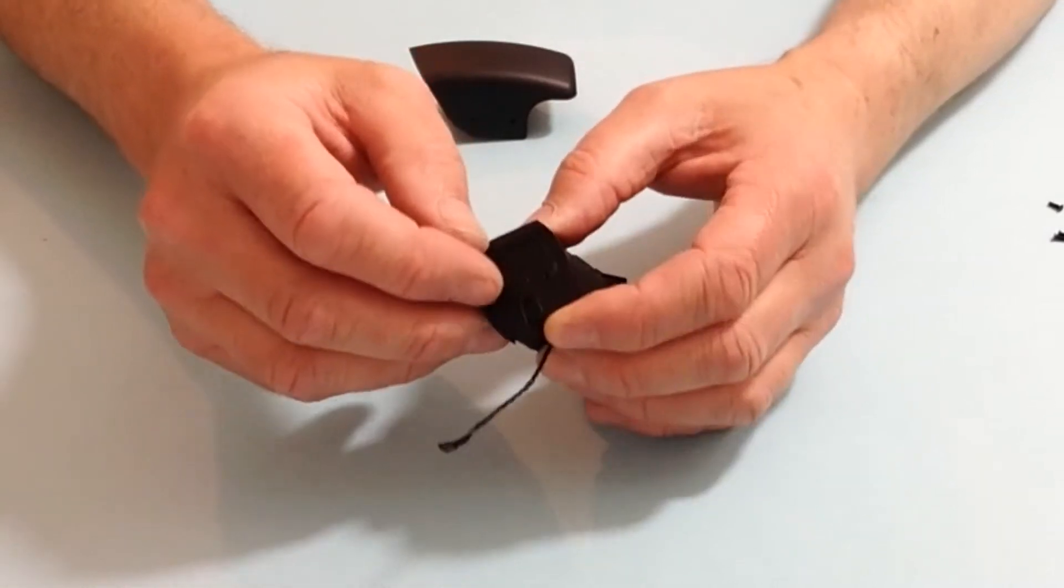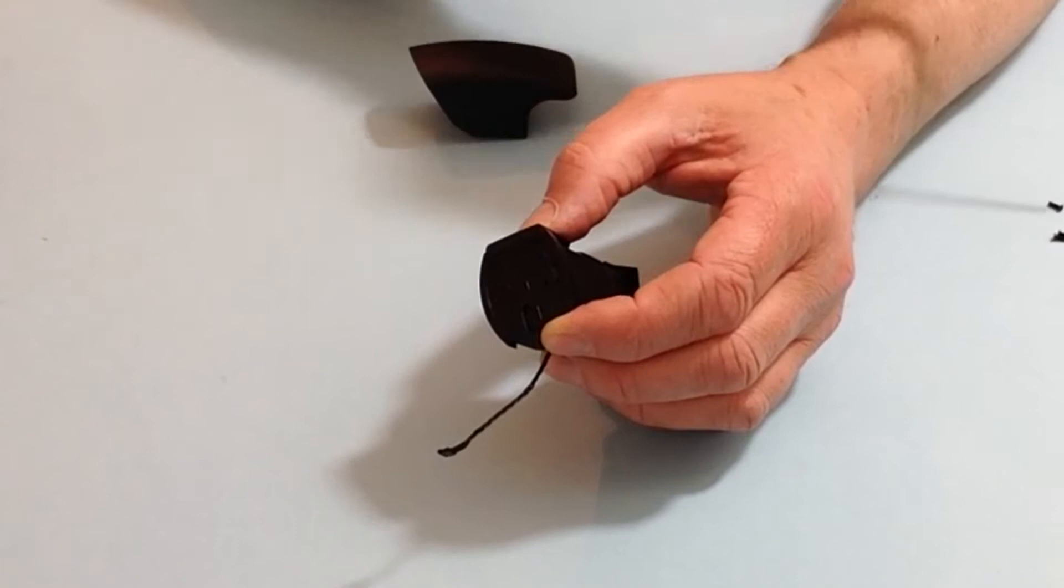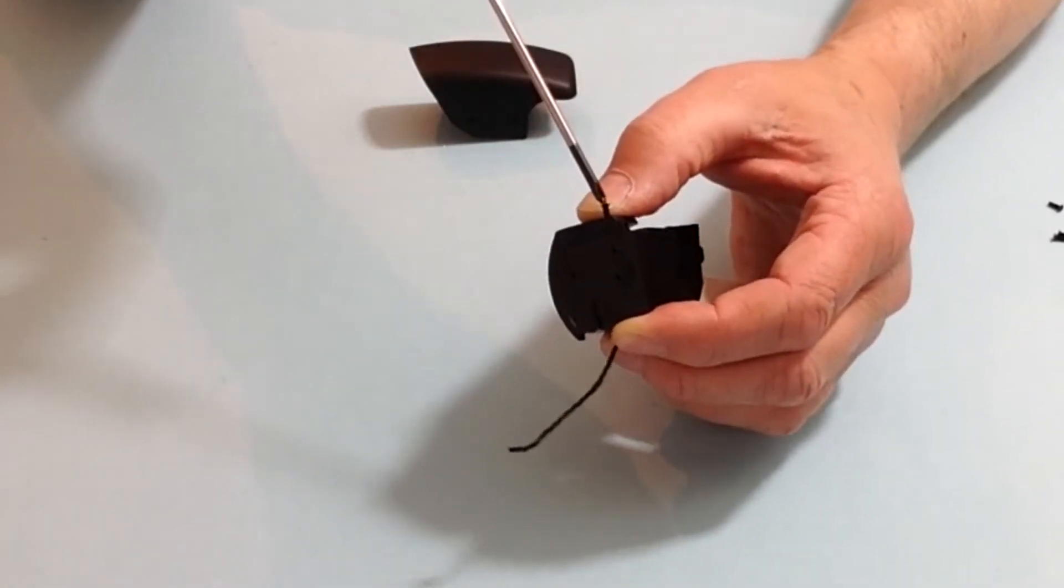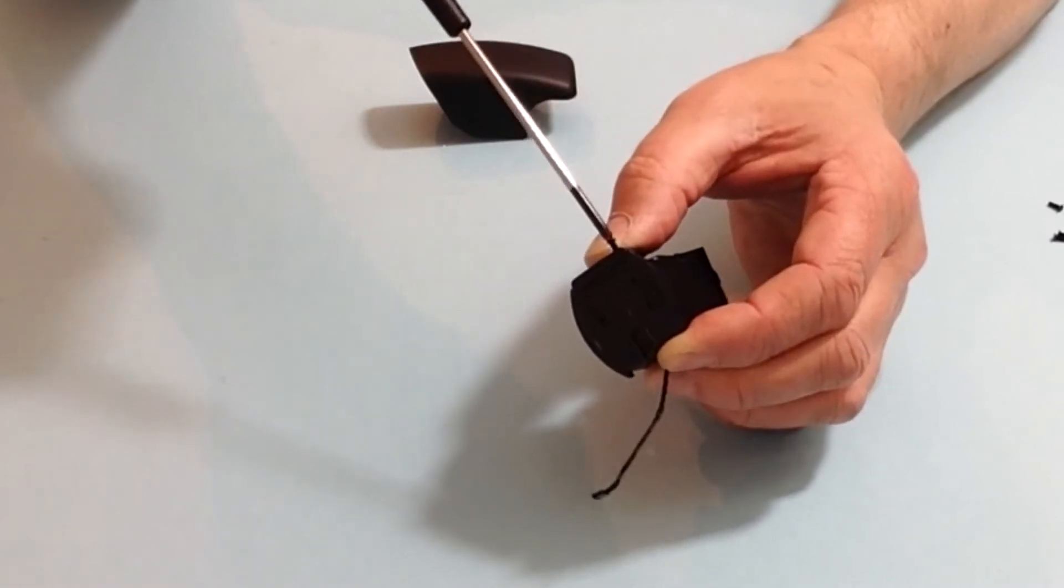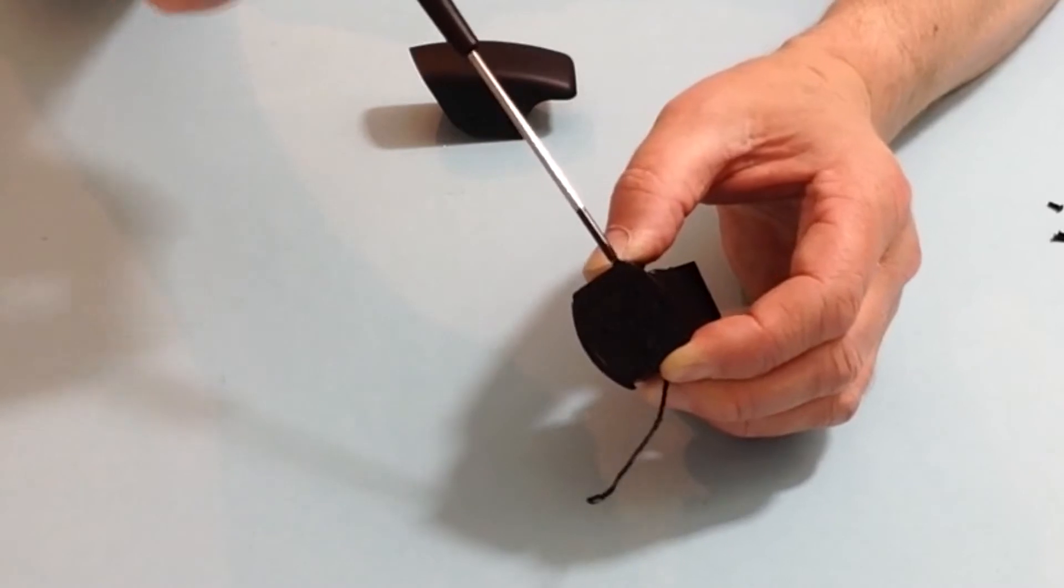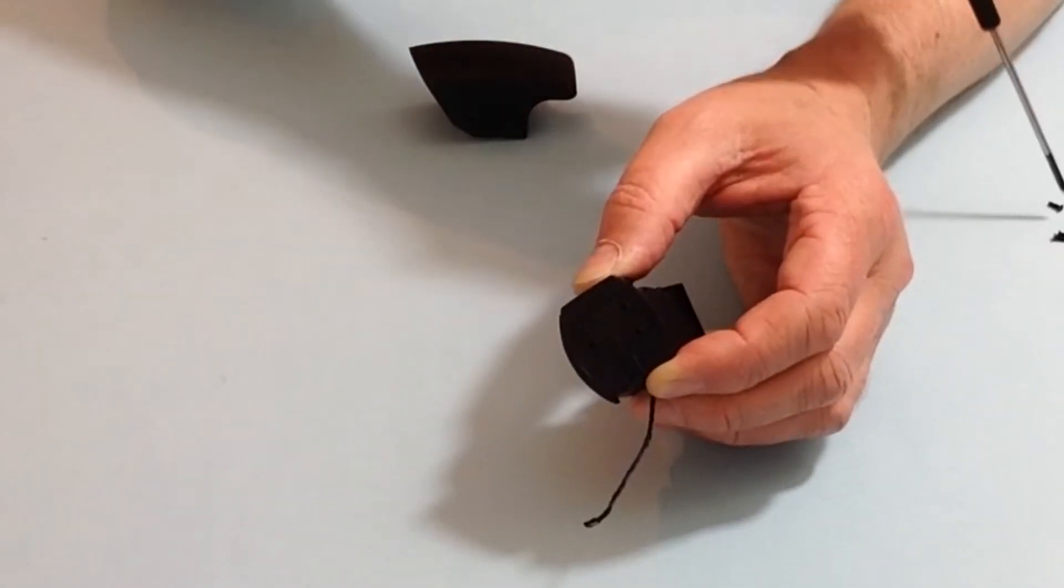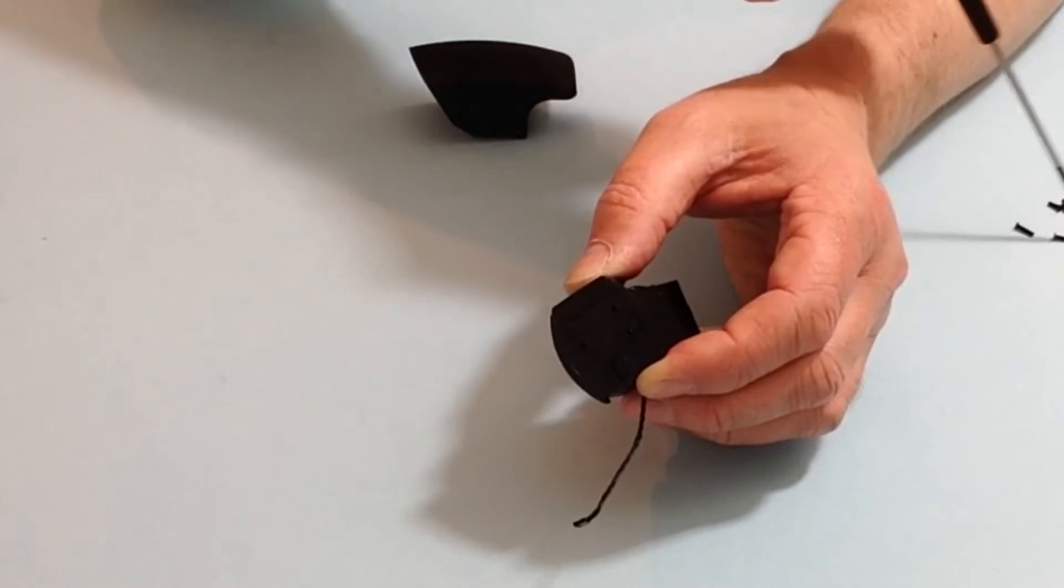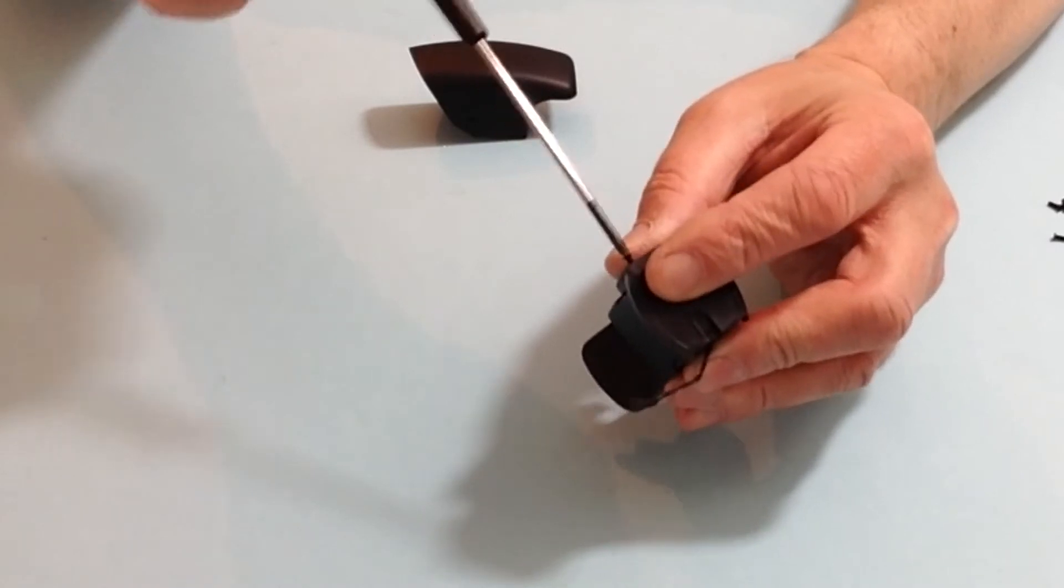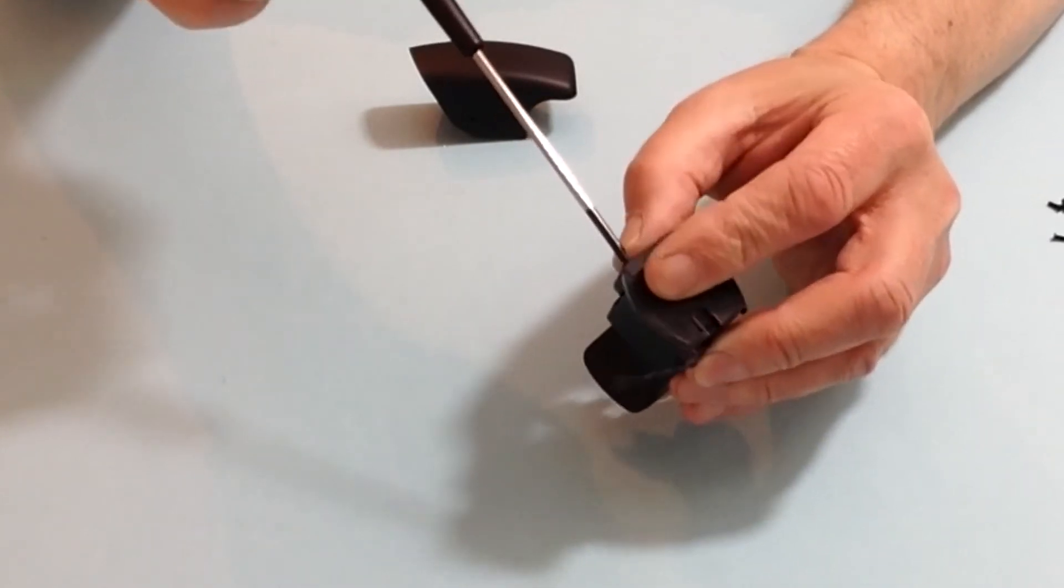Now once you've done that, take two of the sunk screw heads and then just gently screw two of those down into position. Once again do not over tighten. Make sure that they are screwed down so that they are flush with the top.